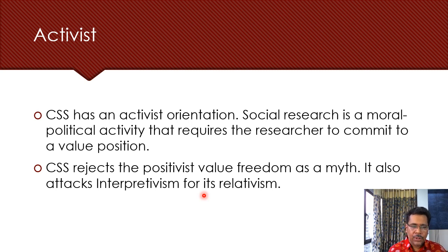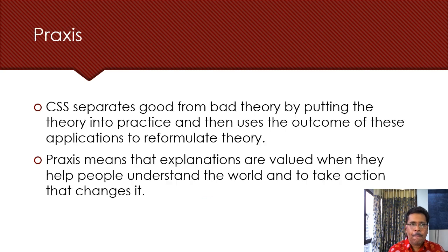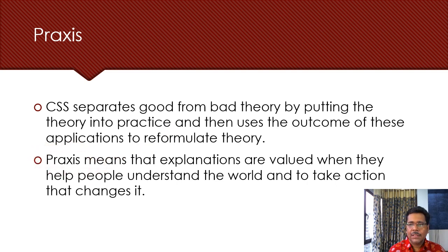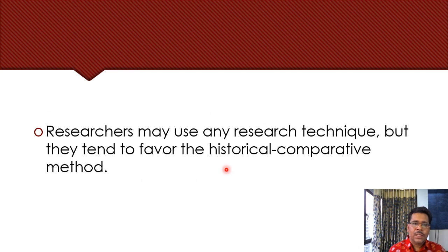The critical social scientist is an activist in certain senses — it is a moral, political activity that requires the researcher to commit to a value position in favour of the dominated and exploited. It rejects the positivist value freedom; critical researchers take sides. It separates good from bad theory by putting theory into practice — explanations are valued when they help people understand the world and take action that changes it. Critical scientists often favour the historical comparative method to look at the underlying conditions of domination. Thank you for being in the discussion today.